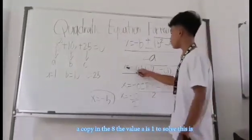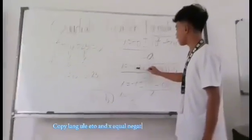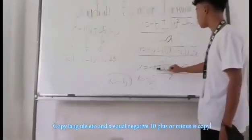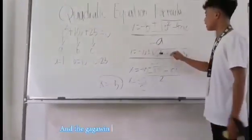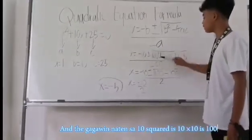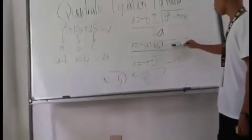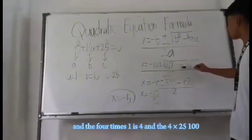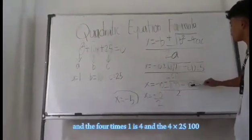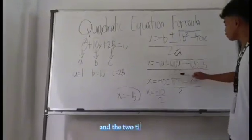To solve this, we copy it again. So x equals negative 10 plus or minus, and what we do with 10 squared is 10 times 10 which is 100, minus 4 times 1 is 4, and 4 times 25 is 100, all over 2 times 1 which is 2.